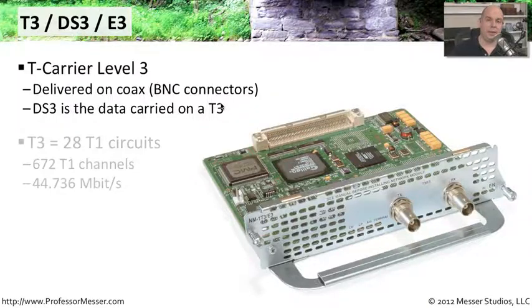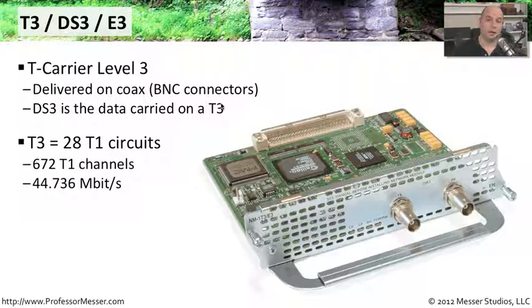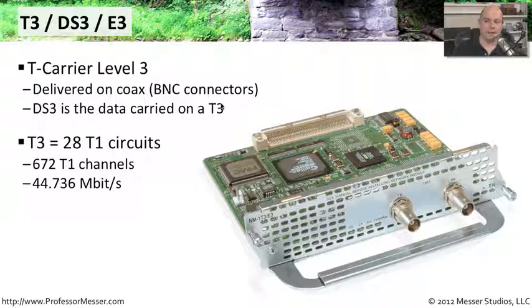A T3 connection allows additional throughputs. There are 28 T1 circuits inside of a T3, which means we have 672 T1 channels inside of that.